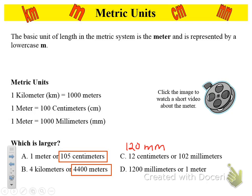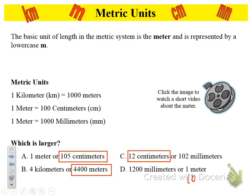For D: which one's larger, 1,200 millimeters or one meter? One meter equals 1,000 millimeters, so 1,200 is bigger than 1,000. Write 1,000 millimeters underneath one meter. Go ahead and circle 1,200.